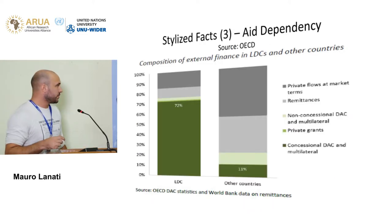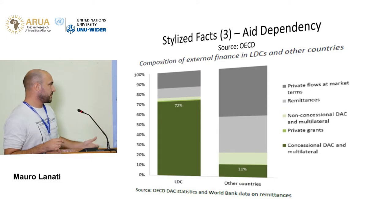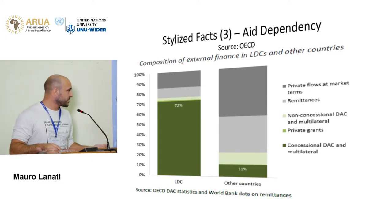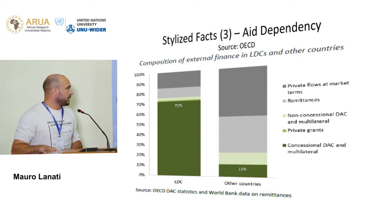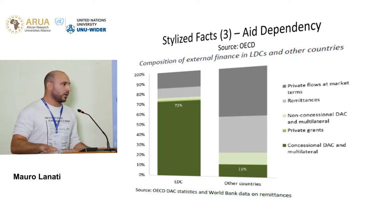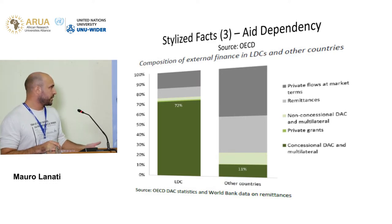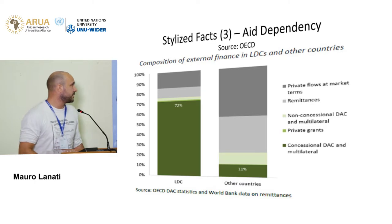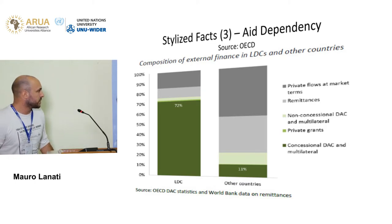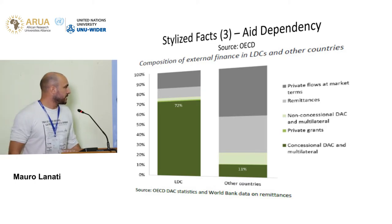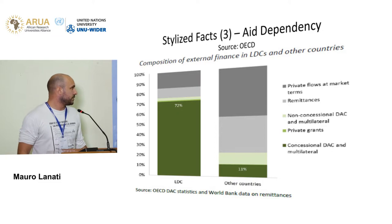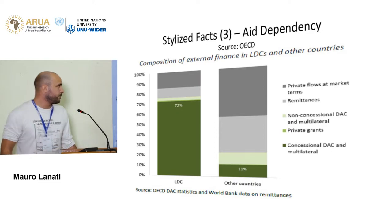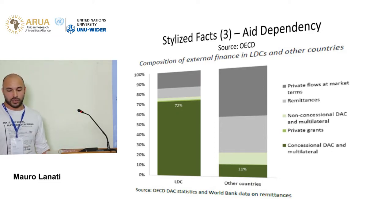Besides this distortion, the LDCs — the countries most in need — depend quite a lot on foreign aid. As we can see here, the composition of external finance in LDCs is composed of 72% of ODA, the official development assistance.